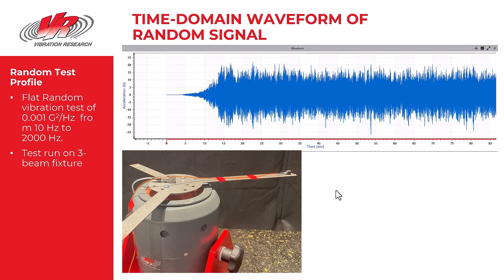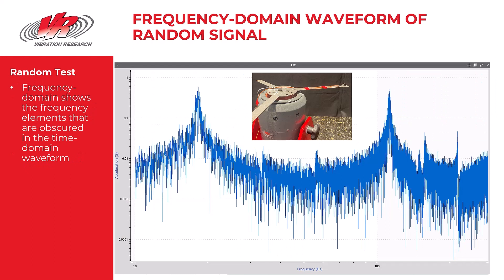The second time domain waveform that I want to look at is from a random vibration test of that fixture we've been working with — the fixture with three arms, three beams. Note the complexity of this waveform compared to that of the tuning fork. It's very, very difficult to look at the time domain waveform here and determine what the dominant frequencies are. But when the time domain waveform is transformed into the frequency domain, you can see much more clearly where the frequency content is.